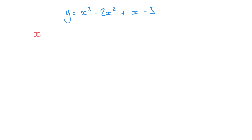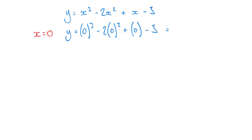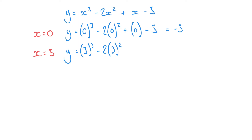Starting with x equals 0, we can say that y equals 0 cubed minus 2 times 0 squared plus 0 minus 3, and y comes out as minus 3 because all of those x terms are 0. Then we have our upper boundary where x equals 3, and in that case y equals 3 cubed minus 2 times 3 squared plus 3 minus 3, and y comes out as 9.